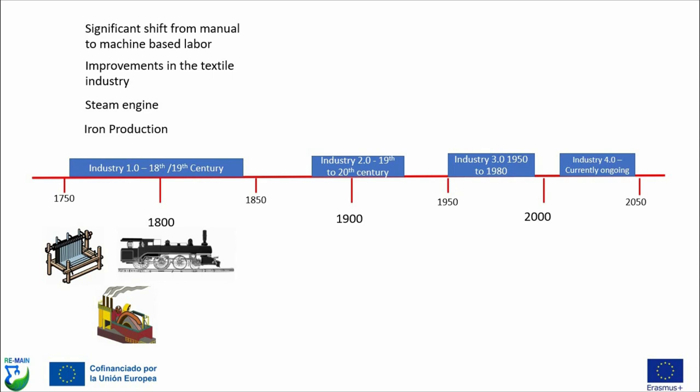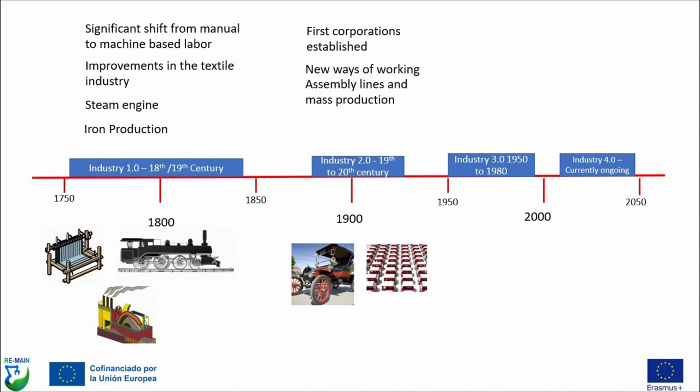Moving on to Industry 2.0, which occurred from about 1870 to 1914 just before World War One. You had the first corporations established. It was around this time Henry Ford set up the Ford Motor Company and started mass producing cars on a scale that hadn't been seen before. This was enabled by new ways of working including the introduction of assembly lines and mass production, producing large amounts of identical goods in a very efficient and process-heavy way.